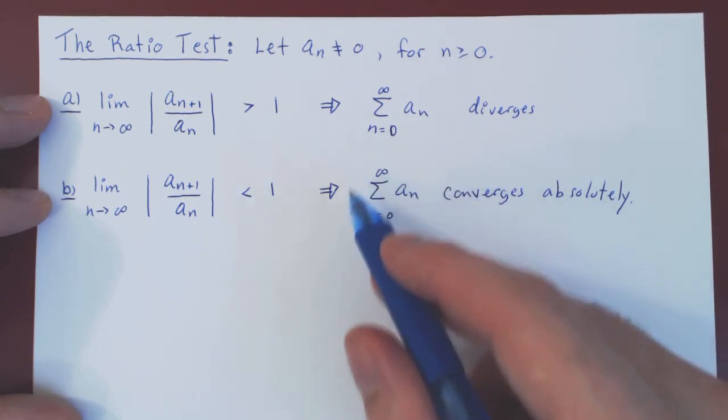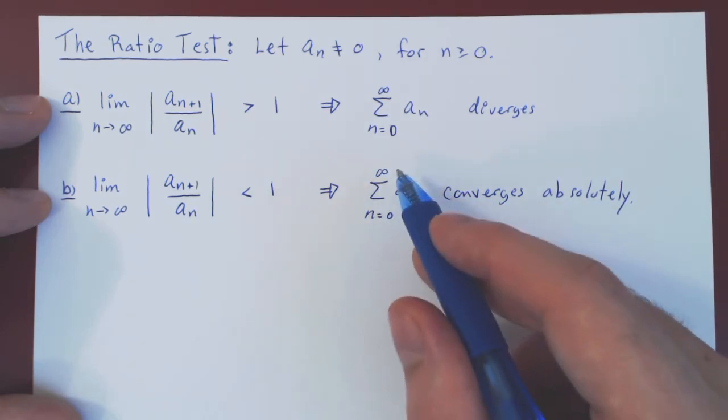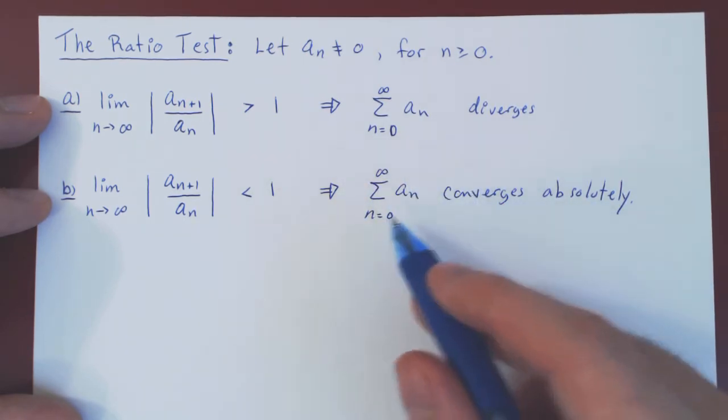Which means that the series itself converges, and the series of the absolute value of an also converges.